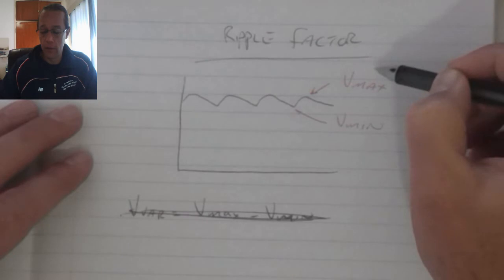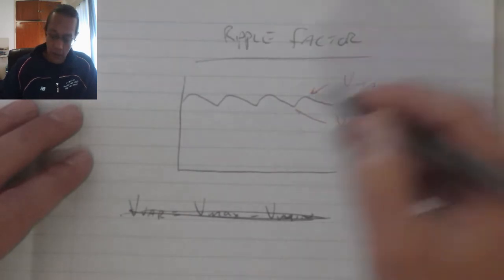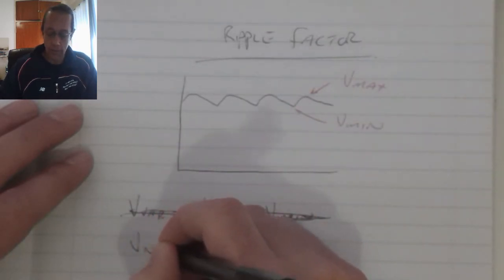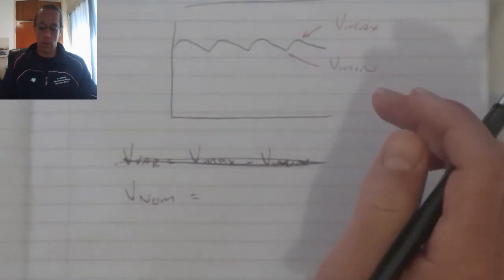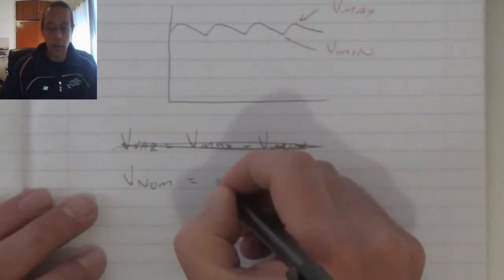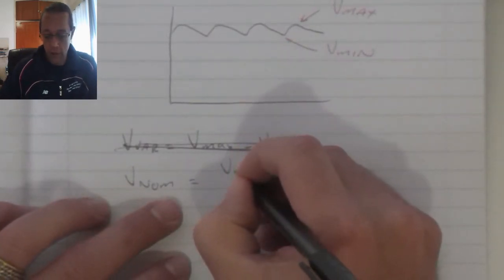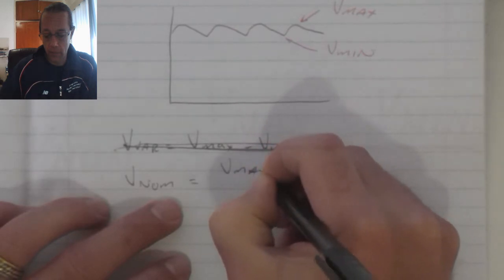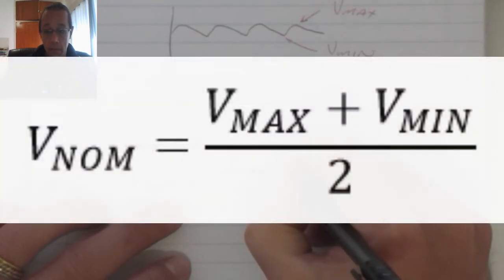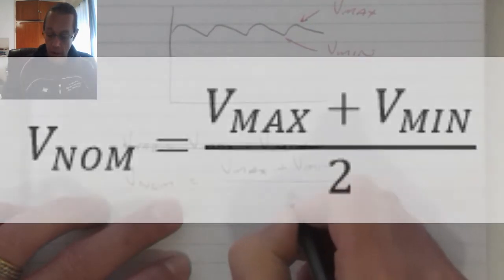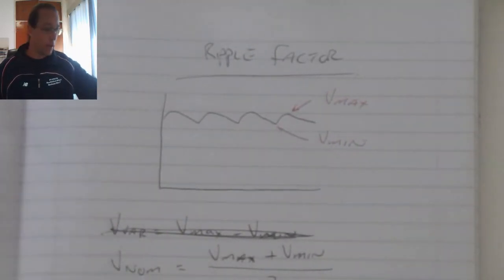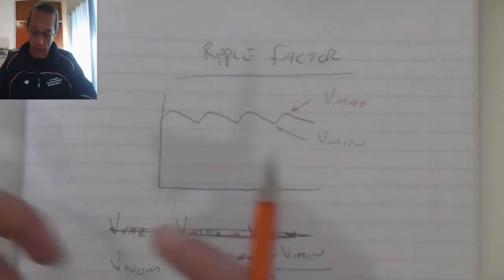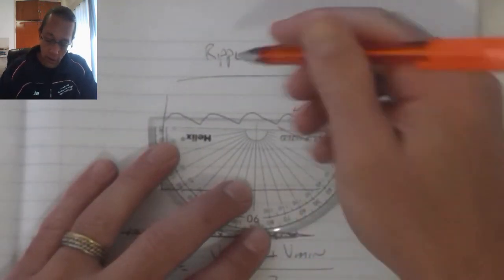So we've got the maximum voltage and the minimum voltage. Now to calculate the nominal voltage, we say that is equal to Vmax plus the minimum voltage divided by 2. So what we get there now is that level right there in the middle of the graph.